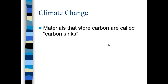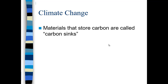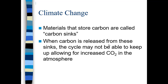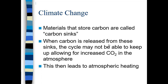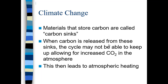Processes like respiration, burning fossil fuels, and land clearing create atmospheric CO2. Photosynthesis and dissolving CO2 in the oceans deplete CO2 from the environment. Material that stores carbon we call carbon sinks — plants, the ocean, and bodies of water. When carbon is released faster than sinks can keep up, CO2 increases in the atmosphere. Increased CO2 acts like glass in a greenhouse, trapping heat and preventing it from radiating back into space — that net temperature increase is what we know as climate change.